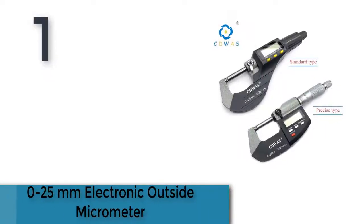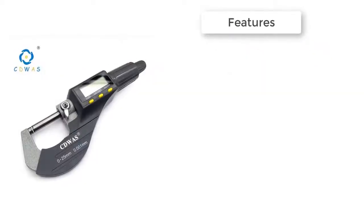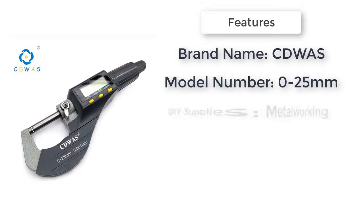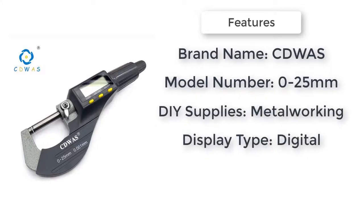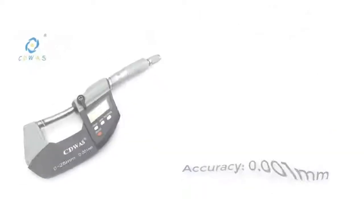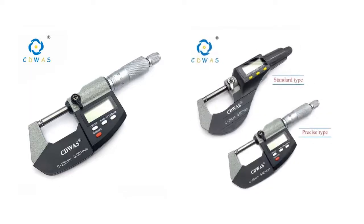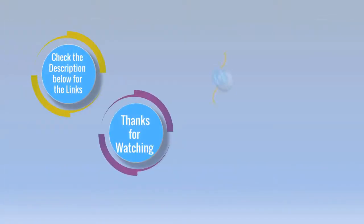The item number 1 is 0 to 25 millimeters electronic outside micrometer. Brand name Duwaz, DIY supplies metalworking, micrometer type outside micrometers, display type digital, model number 0 to 25 millimeters, accuracy 0.001 millimeters.